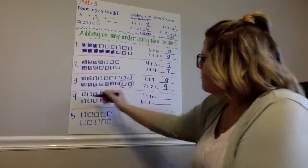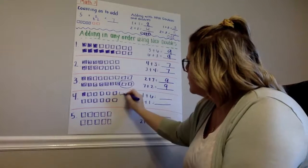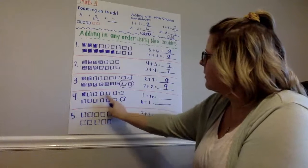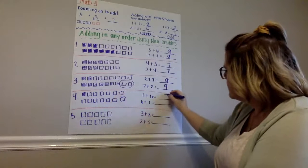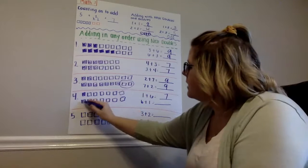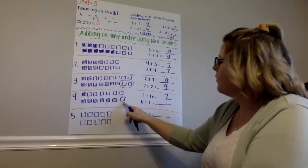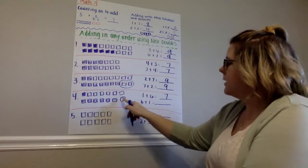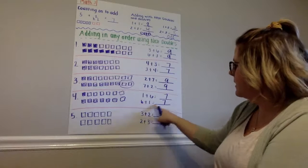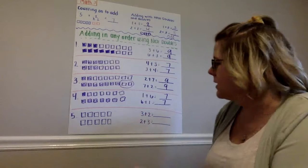Now, number 4. I'm going to color in 1. And I have 6 left. So, 1, 2, 3, 4, 5, 6, 7. 1 plus 6 is 7. Now, I'm going to color in 6. That's what we're starting with. And I have 1 left. 6. And I'm going to count on 7. 1 plus 6 equals 7. And 6 plus 1 equals 7. I'm adding in any order using near doubles.